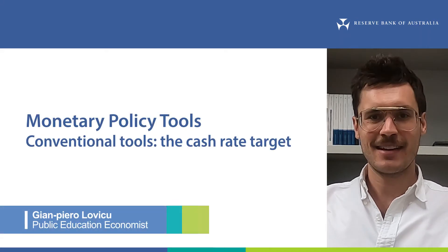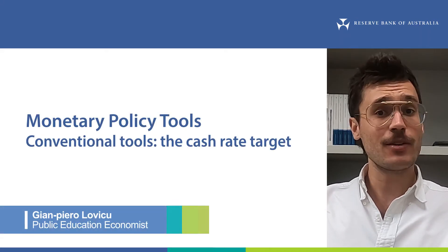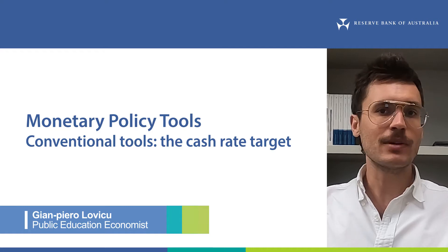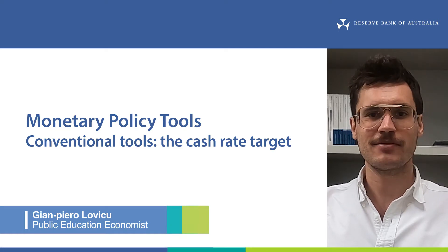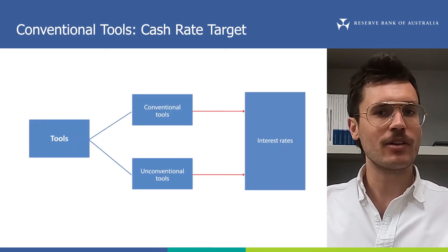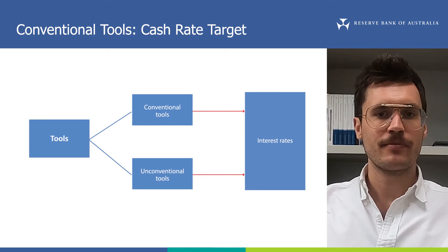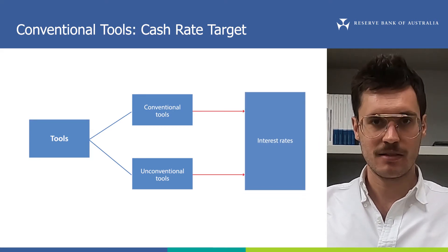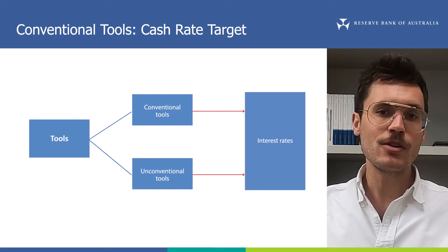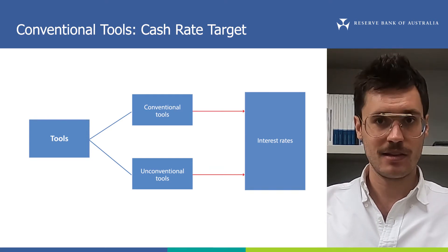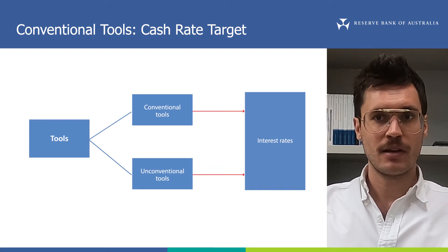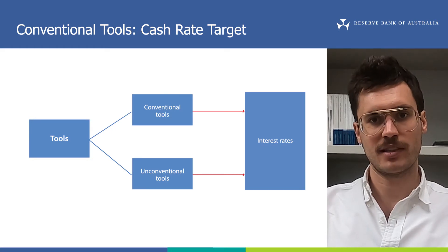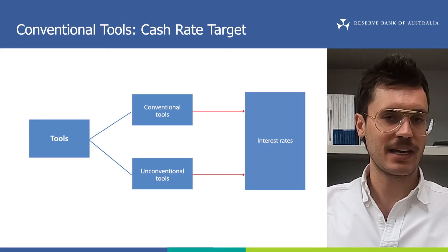Hi, Gigi from the RBA. This video is part of our series on monetary policy. This one talks about the target for the cash rate. Let's take a quick look at our roadmap. In the last video, we discussed the different kinds of interest rates in the economy. I recommend you watch that video before proceeding with this one. In this video, we're going to look at the most well-known tool of monetary policy, the target for the cash rate.